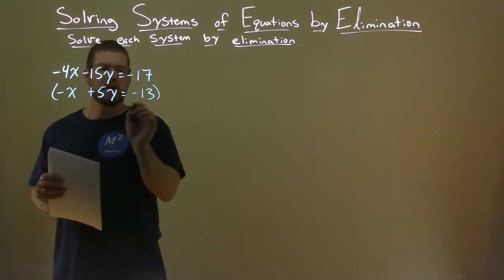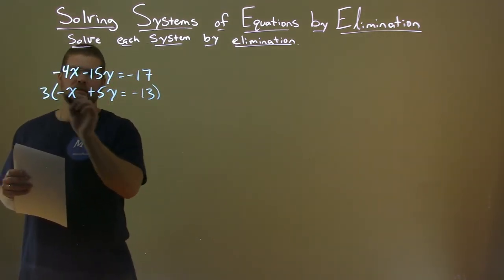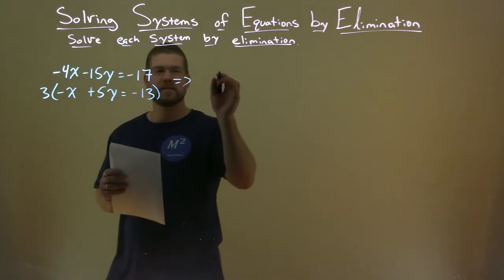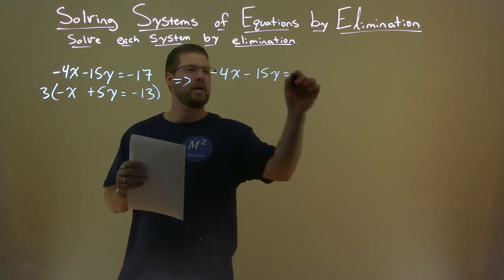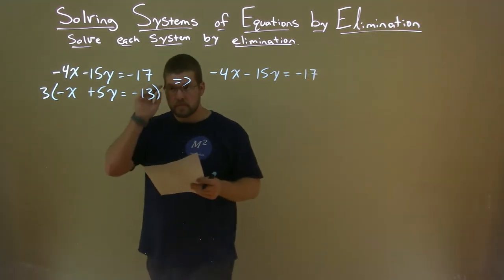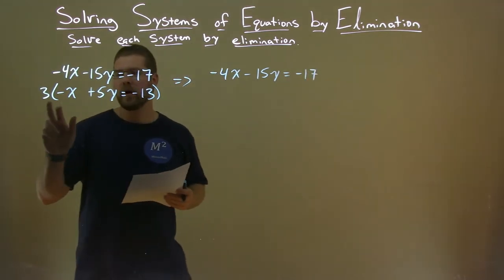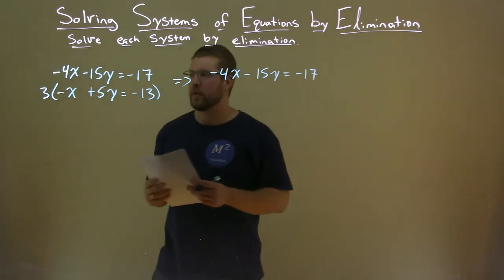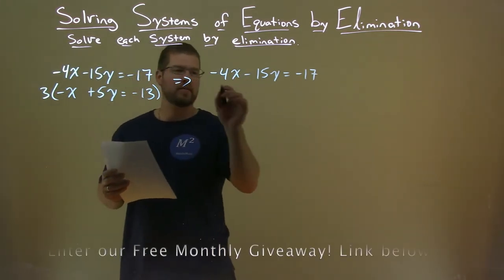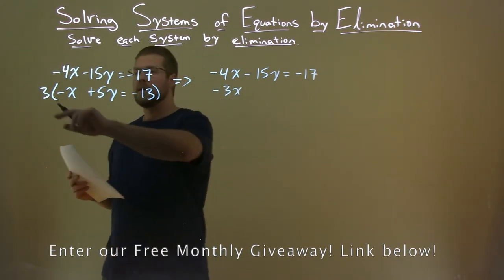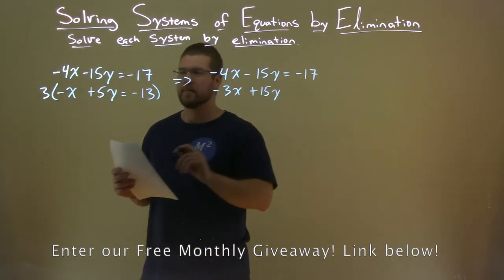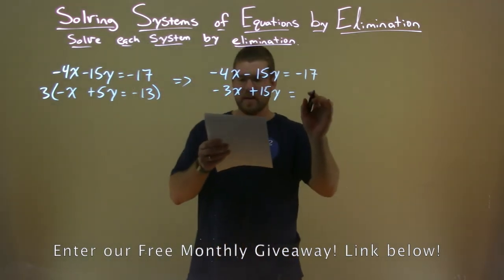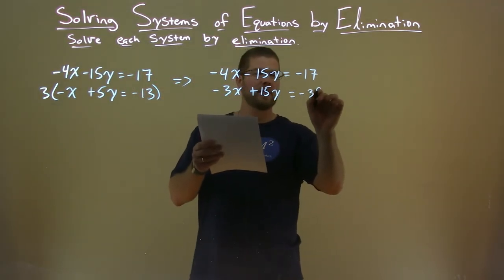So I'm going to take my whole second equation and multiply it by 3. The top equation stays the same, minus 4x minus 15y equals negative 17. Second equation, multiply 3 to all parts, don't forget them. 3 times negative x is negative 3x. 3 times 5y is 15y here. 3 times negative 13 is negative 39.